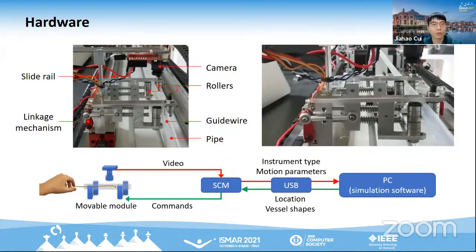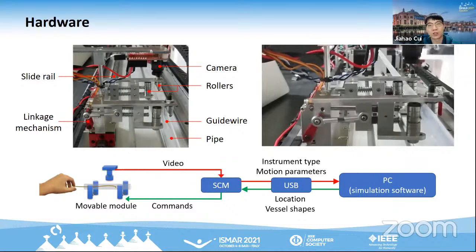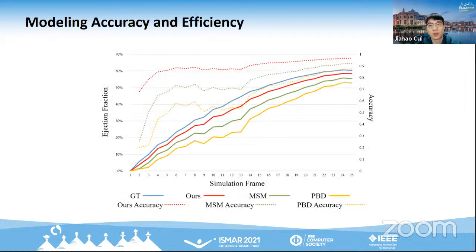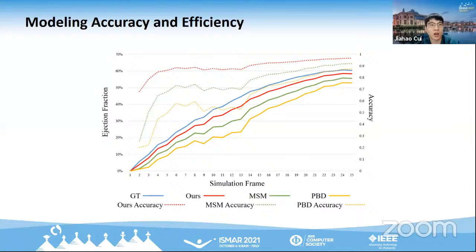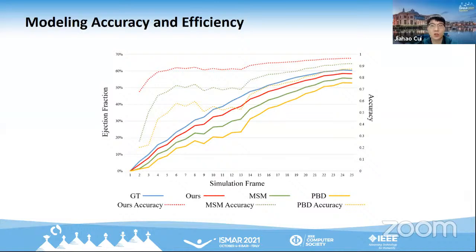For evaluations, we first evaluate the accuracy and efficiency of our system in cardiac modeling, then conduct two user studies. For accuracy, we use a 4D mesh sequence of the heart reconstructed from 4D MRI sequences corresponding to a complete cardiac cycle with 25 frames. Our method achieves higher accuracy compared with other methods. We developed eight rehearsal tasks with personalized clinical data. Statistics indicate our system takes less than an hour to convert a clinical case to virtual rehearsal tasks and accomplish the rehearsal.